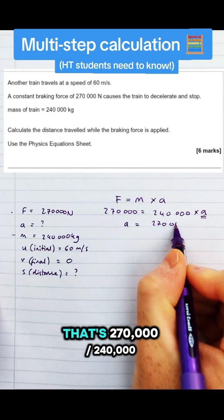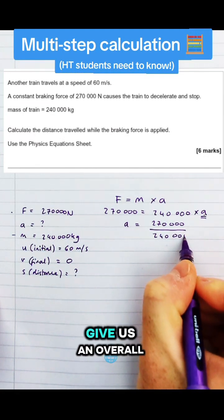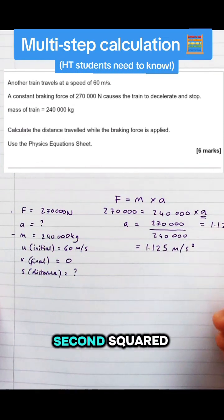So in this case that's 270,000 divided by 240,000 which is going to give us an overall equation of 1.125 metres per second squared.